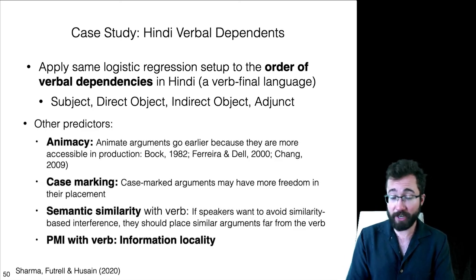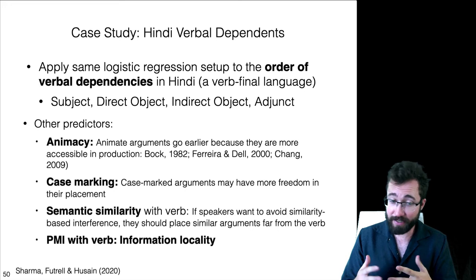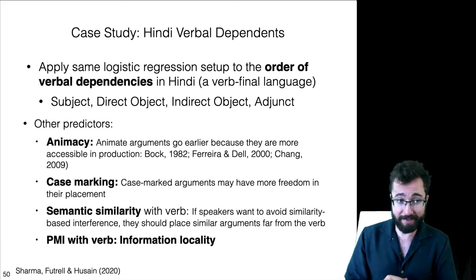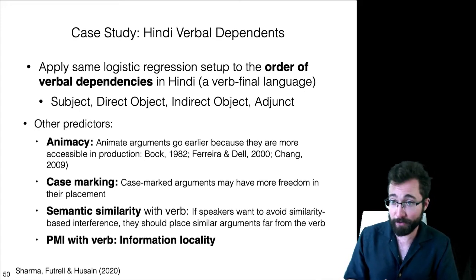The predictors here are going to be animacy, so animate words, words referring to living things, are known to go earlier in sentences. Case marking, because a case marked argument might have more freedom in its word order. Semantic similarity with the verb, and the PMI with the verb instantiating information locality.